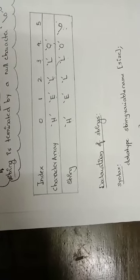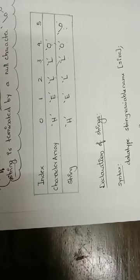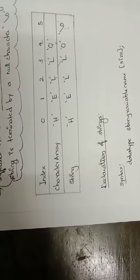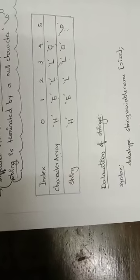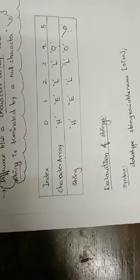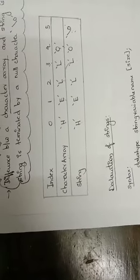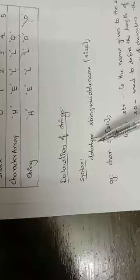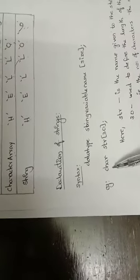Whenever you use a variable in a program, you will have to declare that variable beforehand. The same way, if you want to use a string variable, then that variable has to be declared before use. So the syntax for declaring a string variable is: data type, string variable name, in square brackets you specify the size, and then a semicolon. For example: char str[30];